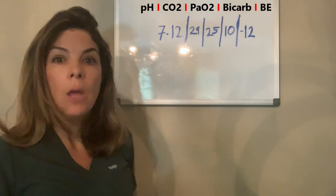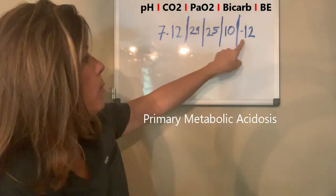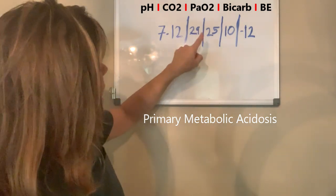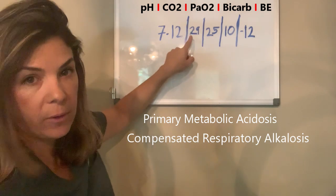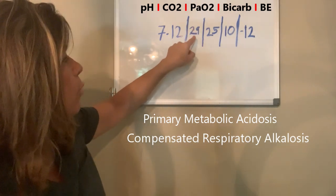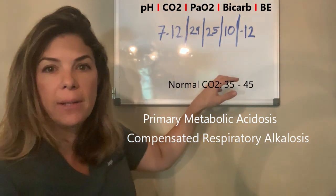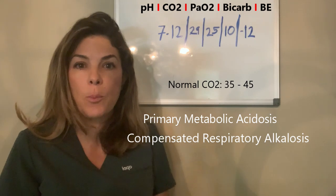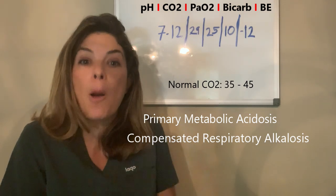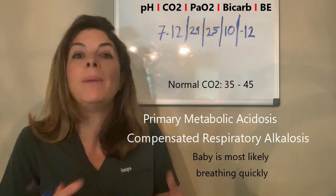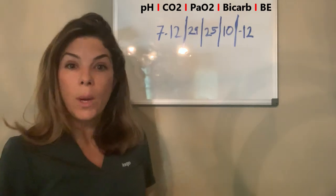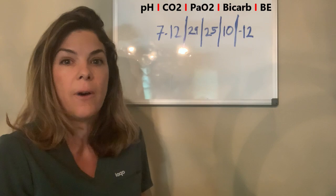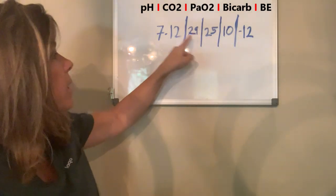Let's put all of that together. We have a primary metabolic acidosis — we know it's primary because we've ended up actually acidotic. And then we have a compensatory respiratory alkalosis. The CO2 is less than 40, so we have an alkalosis. The body is seeing the blood becoming more acidotic, so in a desperate attempt to bring the pH back to 7.4, the baby is compensating with respiratory alkalosis — probably breathing a lot faster to blow off CO2. We know it's not primary respiratory alkalosis; if it were, the baby would be alkalotic.